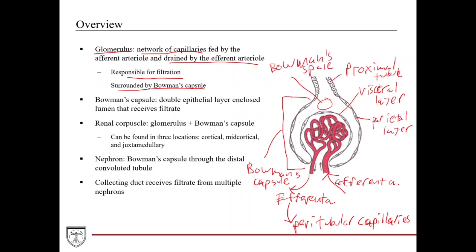To follow everything through: blood comes in through the afferent arteriole, enters the glomerular capillaries, where it is filtered across the filtration apparatus into Bowman's space — the beginning of the nephron. From Bowman's space it travels into the proximal tubule and then on throughout the rest of the nephron. The renal corpuscle is defined as the glomerulus plus Bowman's capsule — the capillaries plus the surrounding Bowman's capsule.